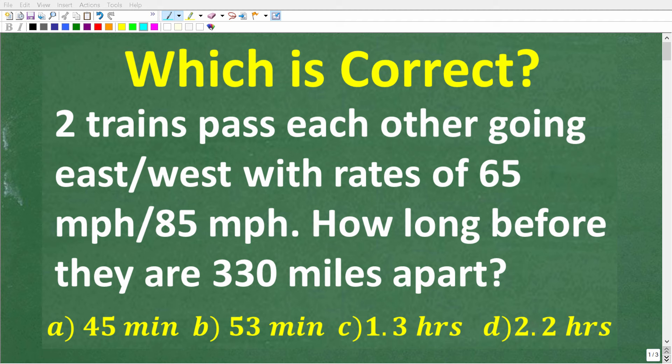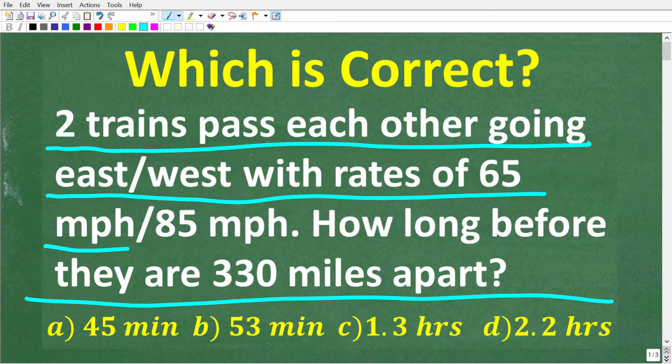Okay, so let's see if your current math skills are strong enough to figure out the answer to this very interesting math problem. So here is the question. Two trains pass each other going east and west with rates of 65 mph and 85 mph respectively. How long before these trains are 330 miles apart?